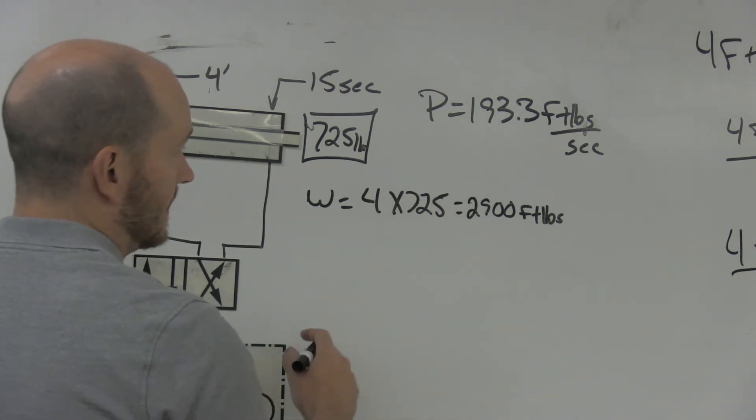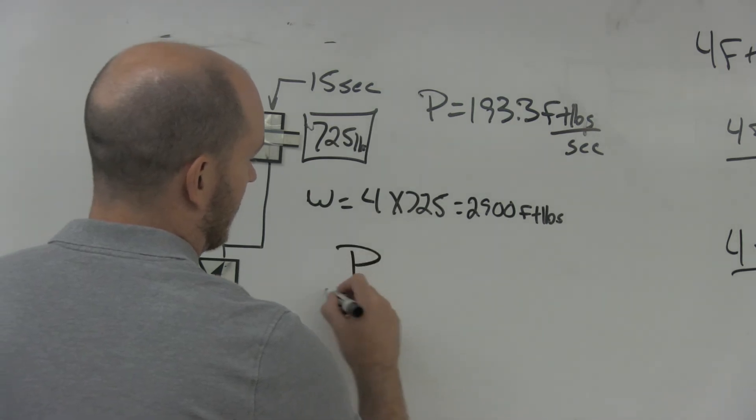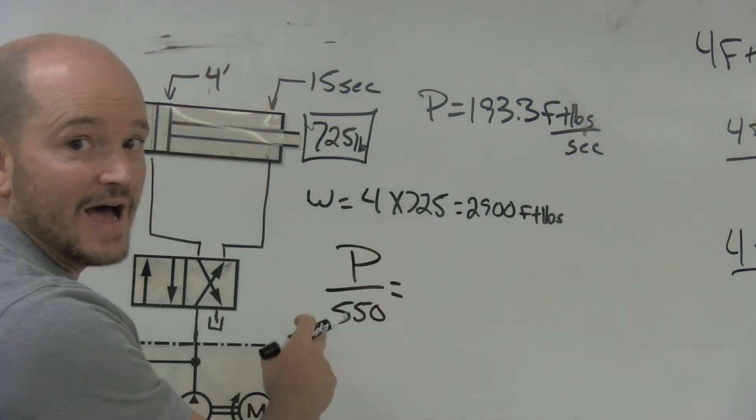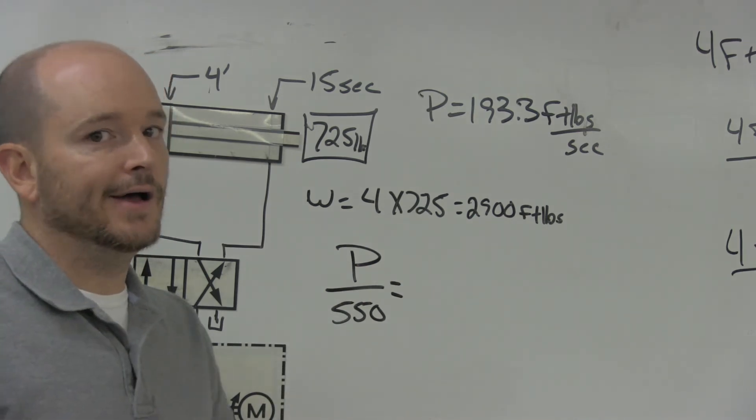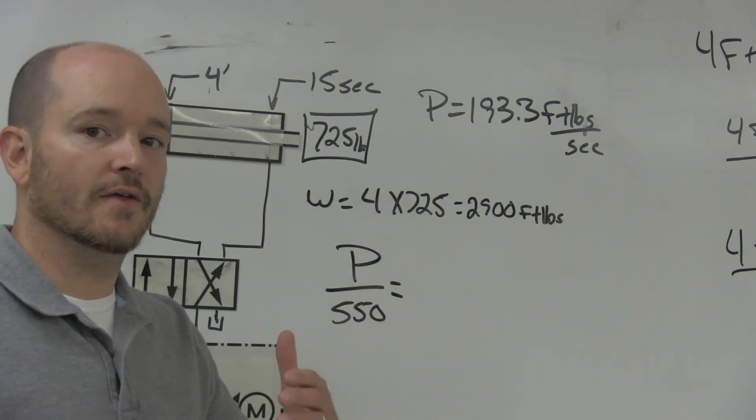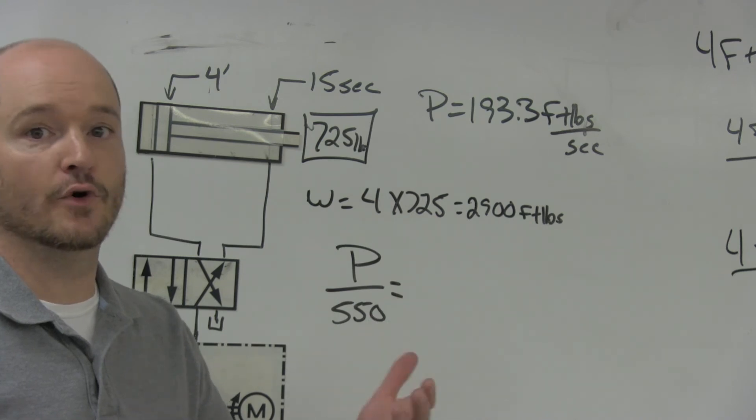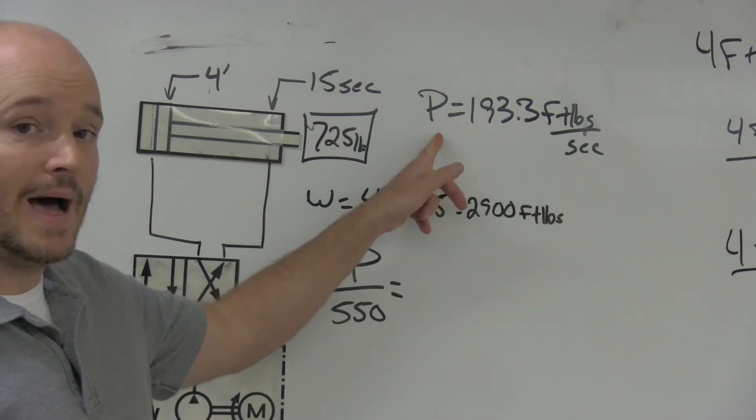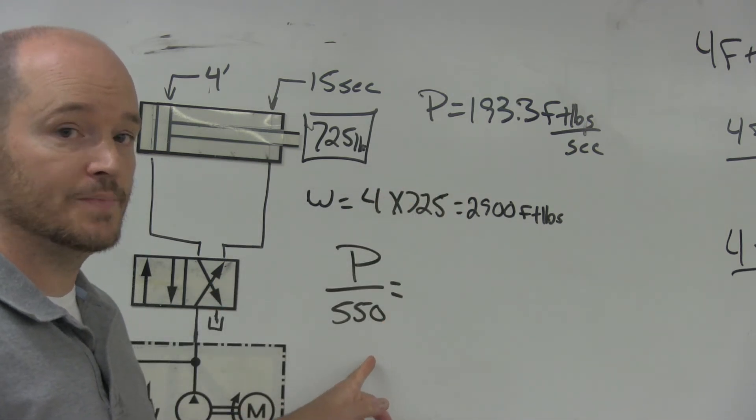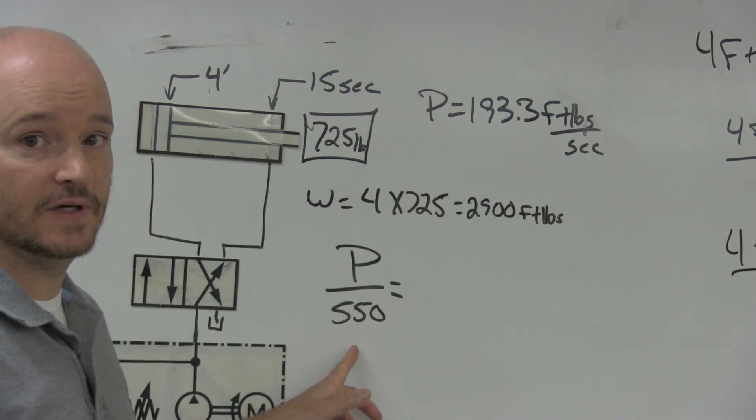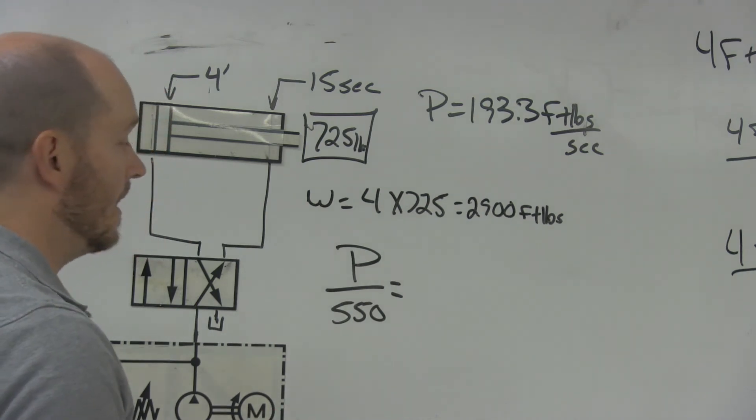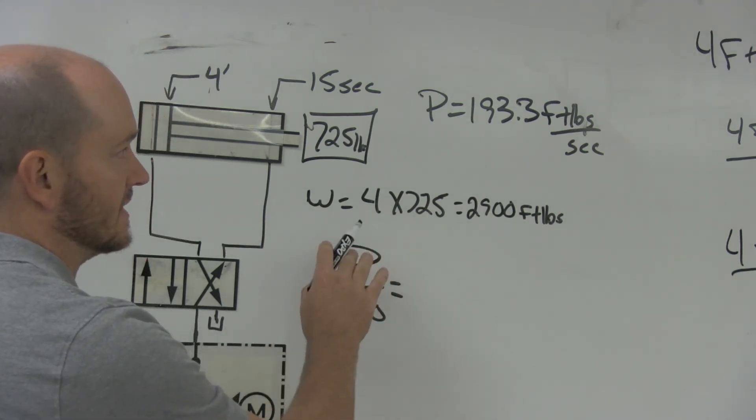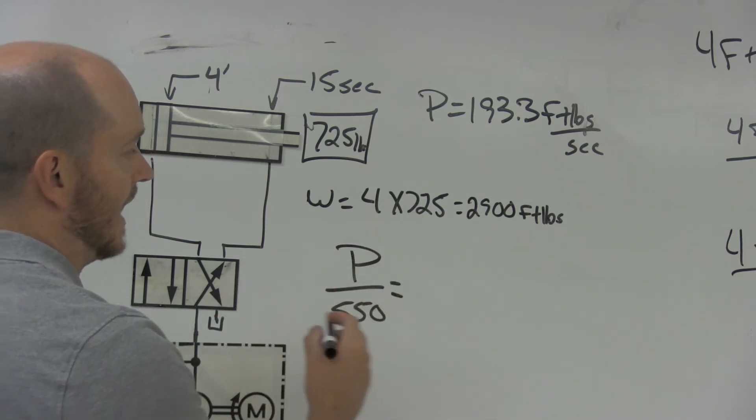I'm going to take power divided by 550. That 550 comes from the horse moving 550 pounds one foot in one second, so 550 is a constant. As long as I have my power, I can convert it to horsepower by dividing by 550.